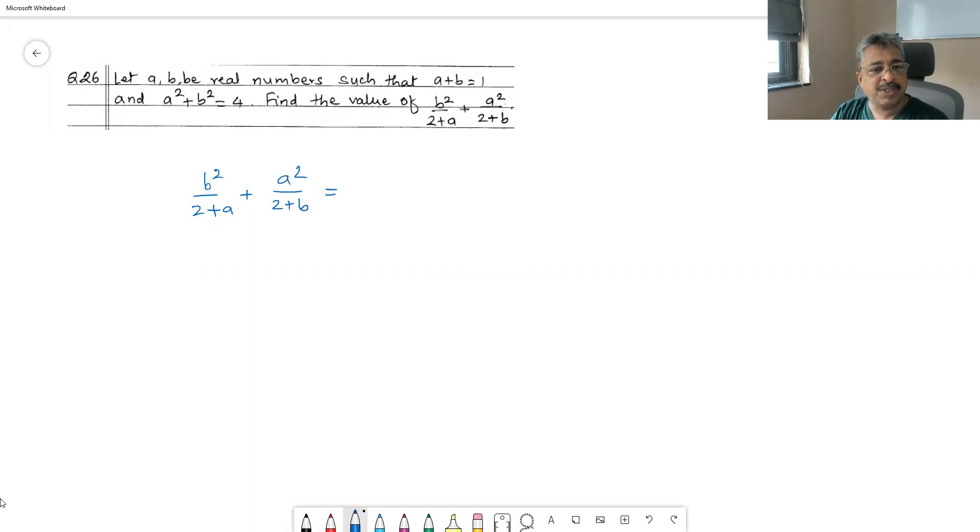We substitute value of b squared: b squared is 4 minus a squared upon 2 plus a, plus a squared is 4 minus b squared, 4 minus b squared upon 2 plus b.